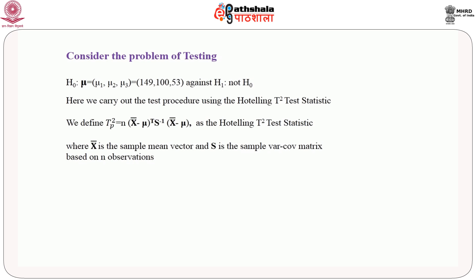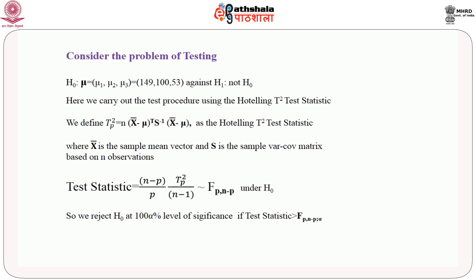We carry out the test procedure using the Hotelling T-squared test statistic. The statistic T² as defined before is the Hotelling T-squared test statistic, and we base the test on (n - p)/(p(n-1)) times T², which follows an F distribution with degrees of freedom p and n - p under H₀. The test rule is that we reject H₀ at the 100α percent level of significance if the test statistic is greater than F(p, n-p, alpha).